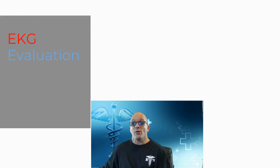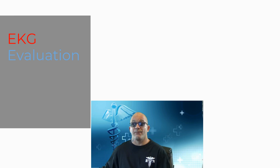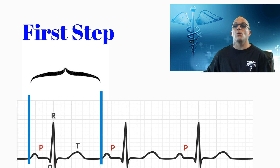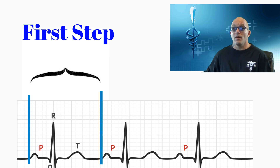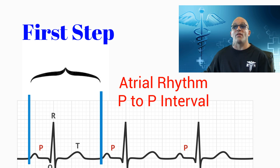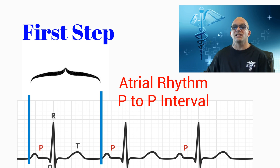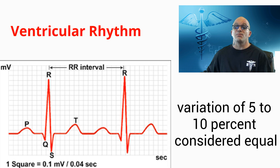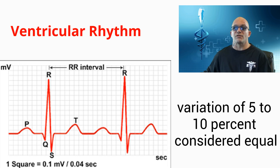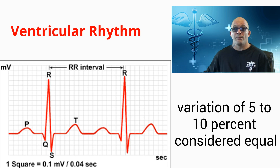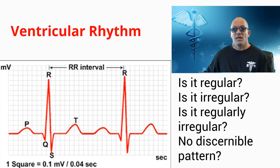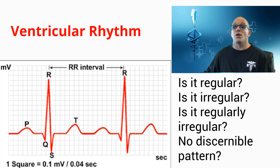When evaluating an EKG, an eight-step process has been created for our assessment. First, we need to assess the rhythm. We check the atrial rhythm by observing the P to P intervals — are they occurring regularly, and if not, is there a pattern noted? For ventricular rhythms, we examine the R to R intervals. Small variations of 5 to 10% are still considered equal. If the R to R interval is irregular, we need to determine if it is regularly irregular — is there a pattern such as increasing R to R durations, or are they completely irregular with no discernible pattern?